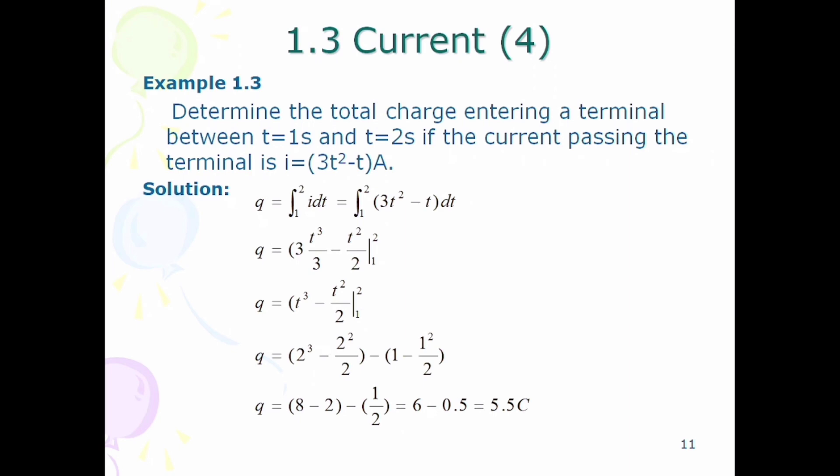Now we start the integration. Three as a constant comes out of the integral. The integral of t² is t³/3, and minus the integral of t is t²/2. Then we have to put the upper limit minus lower limit.